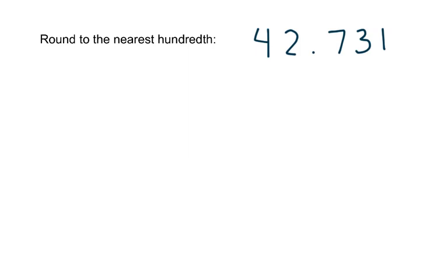The first example we're going to look at is round to the nearest hundredth, and we're given the number 42.731. We're going to round to the nearest hundredth, which means our number is going to stop right here at the hundredths place — that's where our final decimal is going to be when we write our answer. What we have to decide is, is this going to be rounded down to 42.73, or rounded up to 42.74?